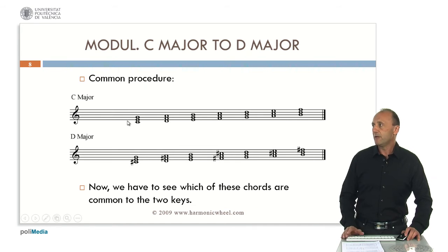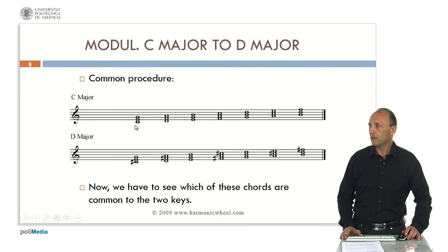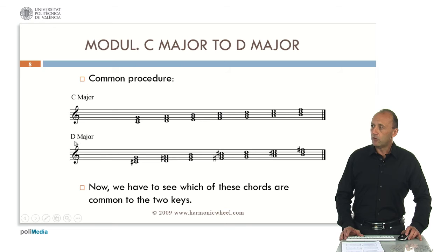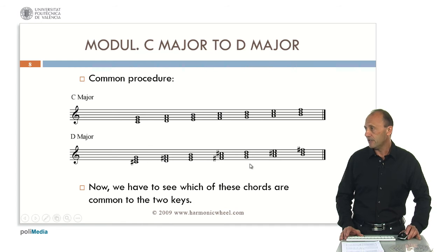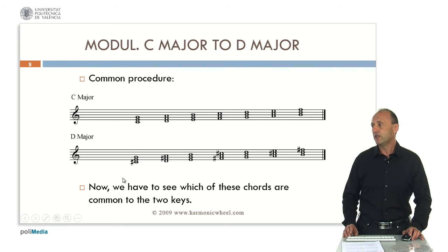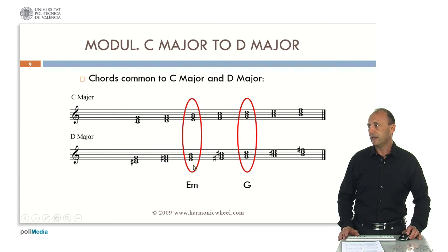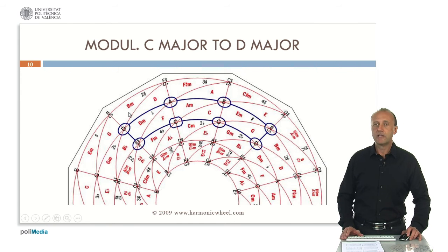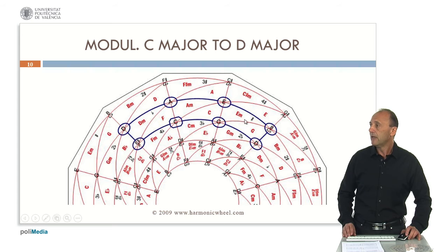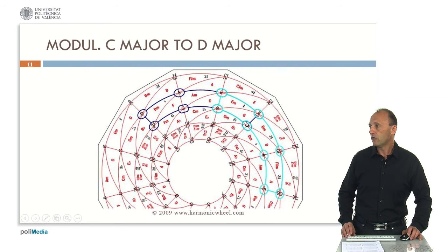We can now modulate from C major to D major. With the common procedure, we write the C major scale and add two thirds on every note, thus obtaining the triad chords. For D major, we write the major scale starting with note C: C sharp, D, E, F sharp, G, A, and B, and then we add two thirds on every note. We can see that there are only two common chords: E minor and G major. If we use the harmonic wheel, here we have the C major scale, and we can observe that the tonic D is two steps to the right of note C. So the chords belonging to D major are these six chords, and only E minor and G major belong to both keys.